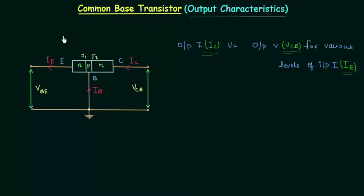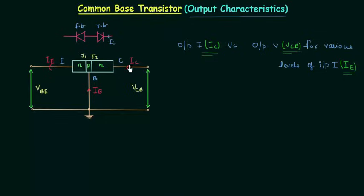If we consider this NPN transistor as two diodes connected back to back, this is the first diode and this is the second diode. To plot the output characteristics in the active region, the first diode is forward biased and the second diode is reverse biased. The current through the second diode is IC and the voltage across it is VCB, so the output characteristics is simply the reverse bias characteristics of a diode.